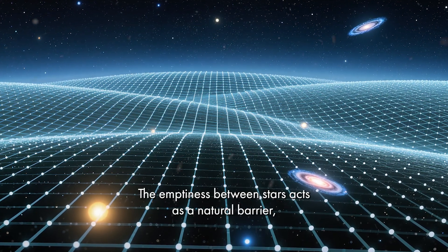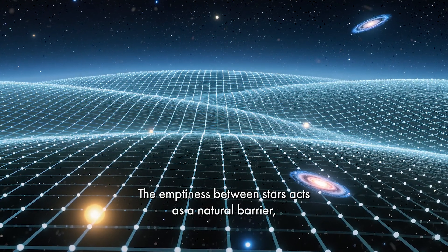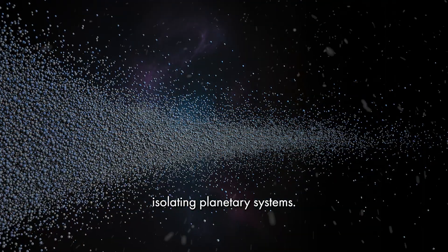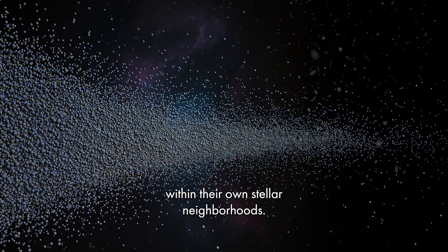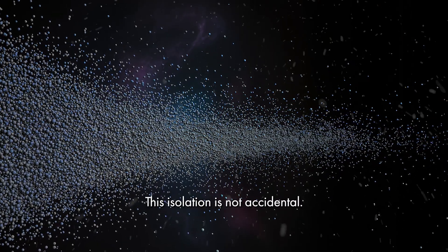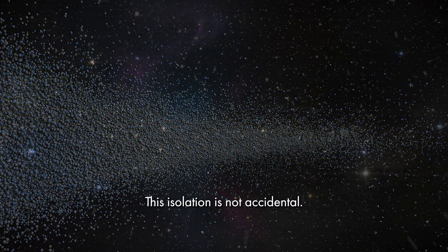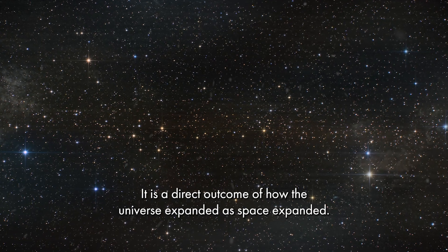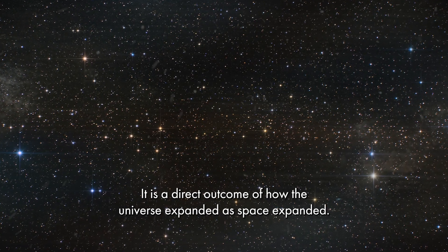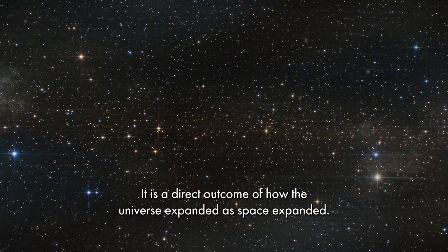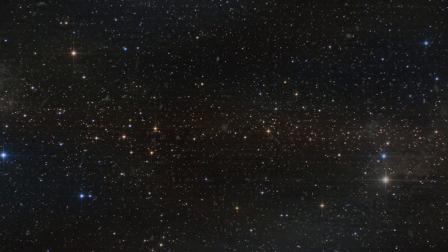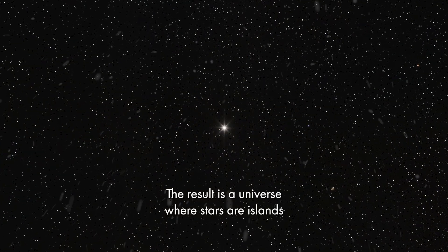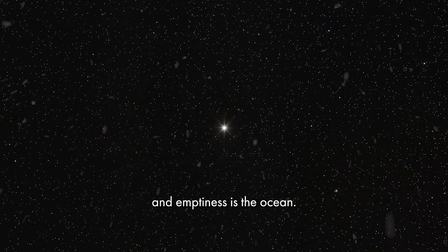The emptiness between stars acts as a natural barrier, isolating planetary systems. Civilizations, if they exist, would be trapped within their own stellar neighborhoods. This isolation is not accidental. It is a direct outcome of how the universe expanded. As space expanded, matter was pulled apart faster than gravity could reconnect it. The result is a universe where stars are islands and emptiness is the ocean.